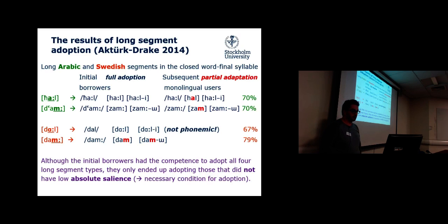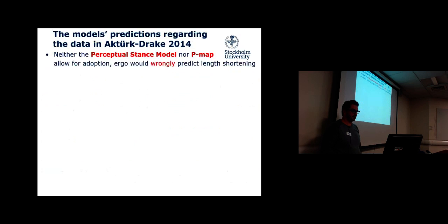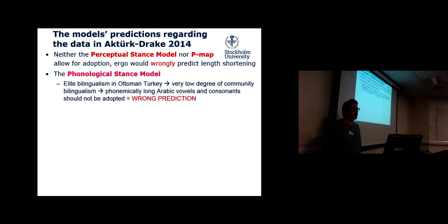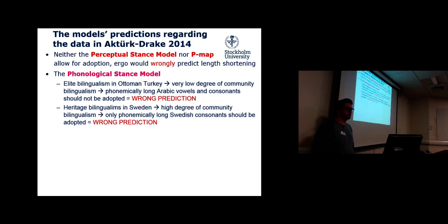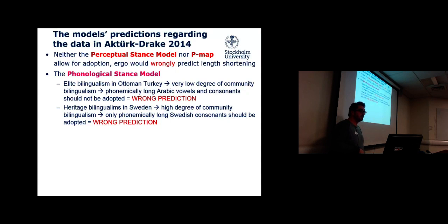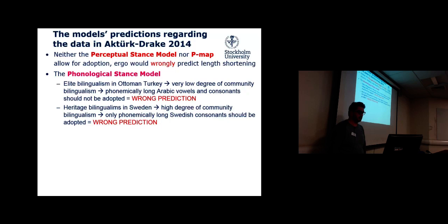In the Swedish data, long vowels are preserved in 67% of cases. But when we look at long consonants — those with low absolute salience — they are shortened in all positions in 80% of all cases. These three results are very similar to each other, while the Swedish consonant result is very different. Although the initial borrowers had the competence to adopt all four long segment types, they only ended up adopting those that did not have low absolute salience. Therefore, high absolute salience must be a necessary condition for adoption.